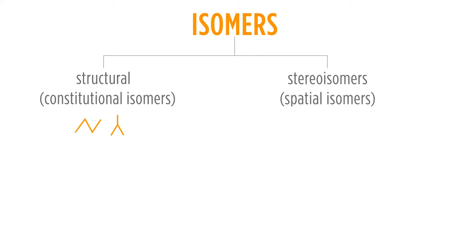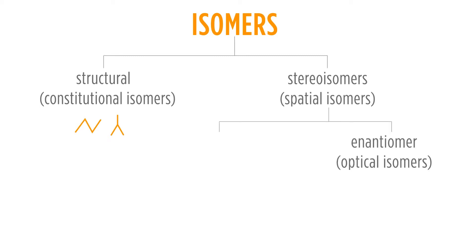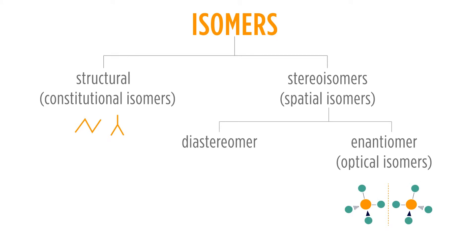With stereoisomers — those where we have different spatial arrangements but the same connections between atoms — we have enantiomers, which are optical isomers, and diastereomers. Enantiomers, or optical isomers, we can think about as a left hand and a right hand. To have an optical isomer, I must have a chiral molecule. One way to have a chiral molecule is to have a carbon with four different things attached. We can visualize a generic carbon with A, B, C, and D attached. We can have two species that are mirror images of each other. Enantiomers are defined as two non-superimposable molecules that are mirror images.